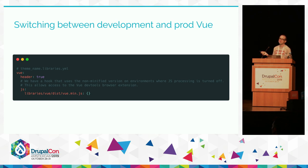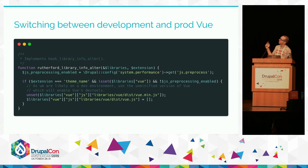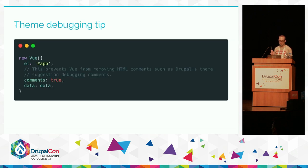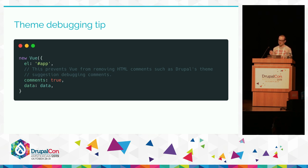Next tip: switching between the minified version of Vue for production and the unminified version for development. We have a Vue Drupal library for the minified version, then a library alter hook that checks whether JavaScript preprocessing is turned on at the Drupal level. If it isn't, we switch out the minified version for the unminified version, which gives access to dev tools and much nicer error reporting. Final tip: Vue strips out HTML comments from Vue templates. If your Vue template is also your Twig template, that removes your Drupal theme debugging comments that tell you which templates are being used. To fix that, just add 'comments: true' to your Vue configuration and it will leave the Drupal template comments as they are.